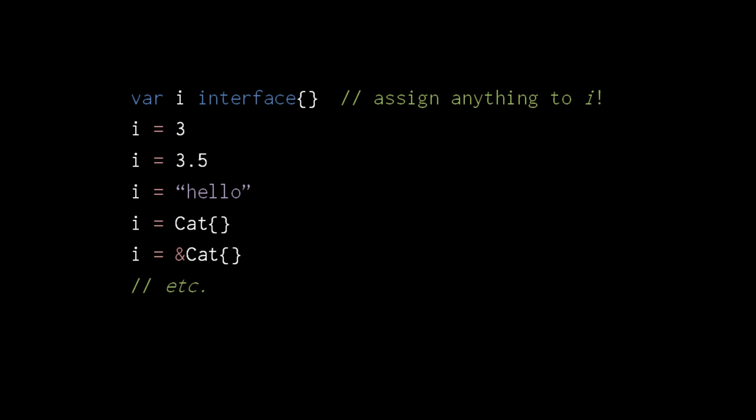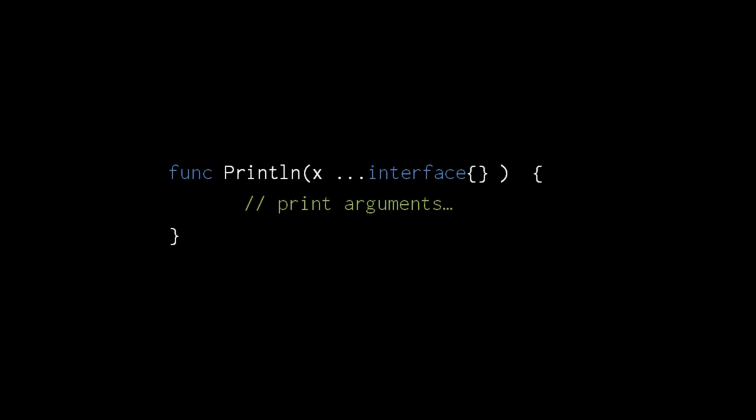The special empty interface has no methods, but empty interface variables can reference any other kind of value. Here we have an empty interface variable i, and we can assign it numbers, strings, structs, pointers — anything. For an example of how the empty interface might be useful, the println function introduced earlier is defined as a variadic function taking any number of empty interface arguments. In other words, the println function takes arguments of any type. Inside the function body, println uses type assertions and the standard library reflect package, which we'll discuss later, to discover the actual types of the arguments and then print those values to standard output.